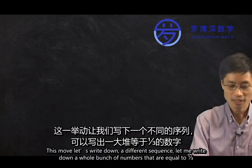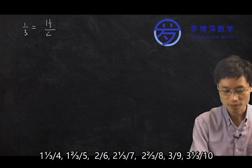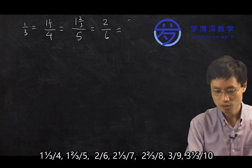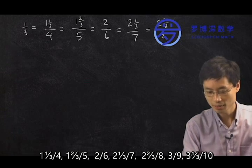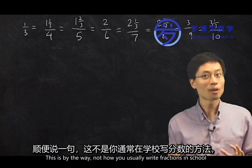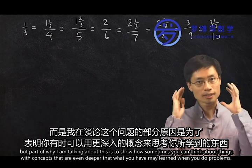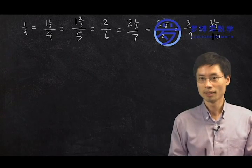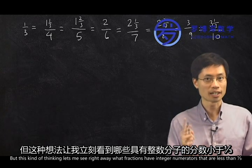Let me write down the sequence: one and one-third fourths, one and two-thirds fifths, two-sixths, two and one-third sevenths, two and two-thirds eighths, three-ninths, three and one-third tenths. This is not how you usually write fractions in school, but part of why I'm talking about this is to show how sometimes you can think about things with concepts even deeper than what you may have learned. This kind of thinking lets me see right away what fractions have integer numerators that are less than one-third.